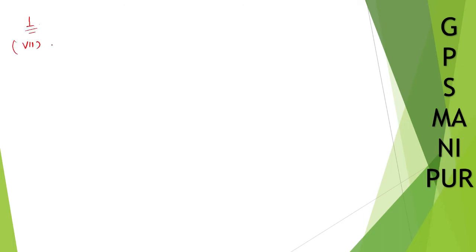Now, we are doing exercise 2.3, question number 1, factorize by using Factor Theorem, problem number 7. The question is x cubed plus 13x squared plus 32x plus 20.